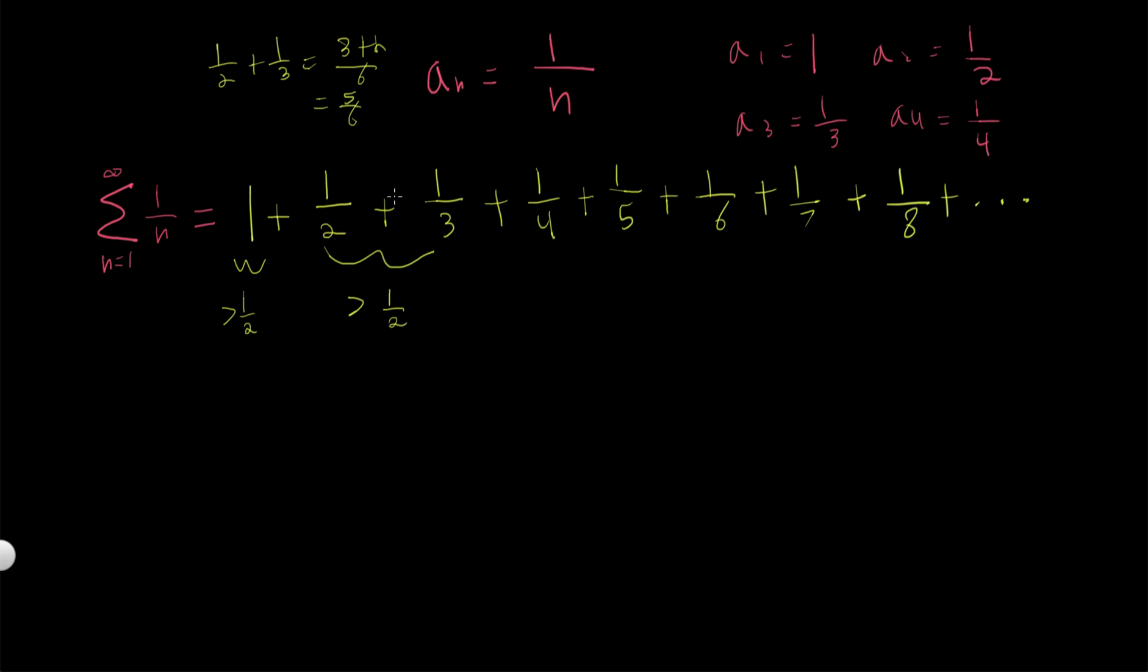And then 9 over 20 plus 1 sixth. Let's see what that is. 9 over 20 plus 1 over 6. So we can get a common denominator of, let's see, I think 60 here, right? So we multiply this top and bottom by 3, that's 18 over 60 plus 10 over 60. This is 28 over 60.